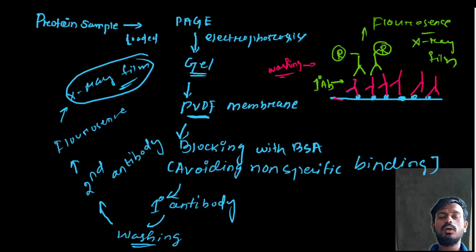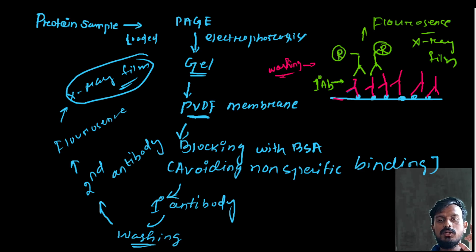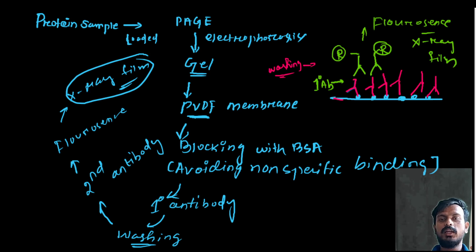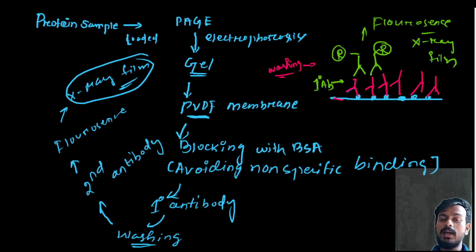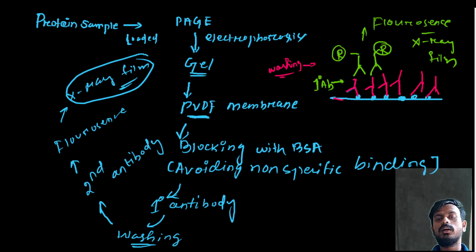That's all about blotting. We discussed two topics today: PCR and blotting. PCR is an amplification technique where DNA or RNA samples are amplified to produce more copies. Blotting is a detection technique — remember which blotting technique is used for the detection of each compound, as that can be asked in the exam. If you have any queries, put them in the chat box or comment section. Thank you.